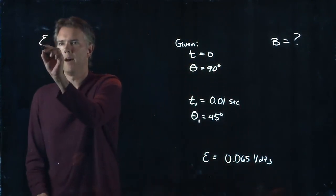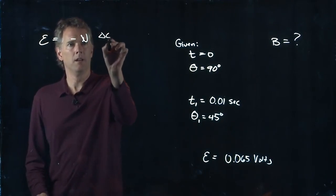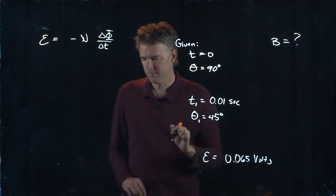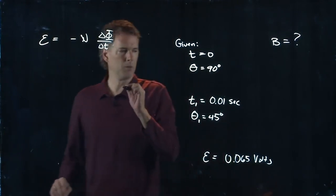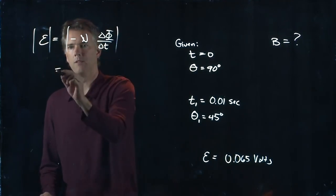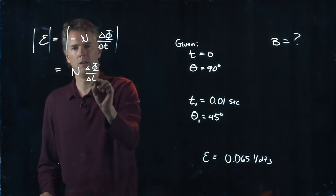So we go back to our definition for emf. The emf we said was negative N delta phi over delta t, and we're only really worried about the magnitude here, so we'll just put some magnitude bars on it.